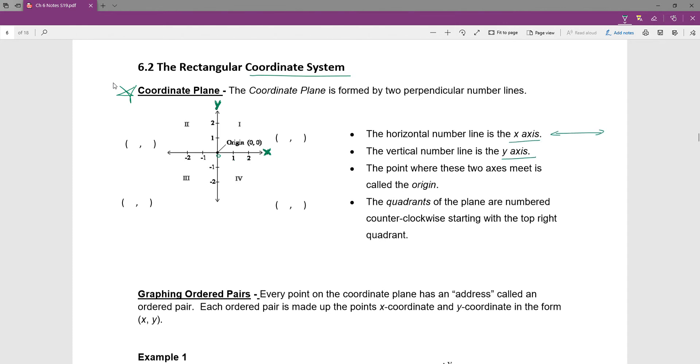So x-axis going this way, and that's the number line, and y-axis going vertically, and that's another number line. Again, you've got the positives and the negatives. The point where these two meet, so at coordinate 0, 0, if you will, that is the origin, and that's marked on our graph right here.